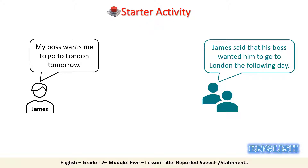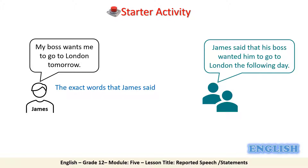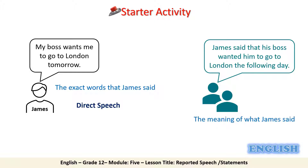Let's see what we have. The statement in the black speech bubble shows the exact words that James said — that's why we call it direct speech. However, the statement in the green speech bubble shows the meaning of what James said, and that's why we call it reported speech.